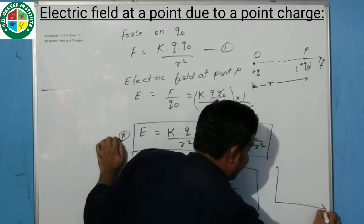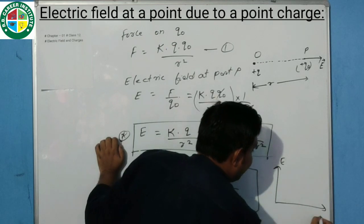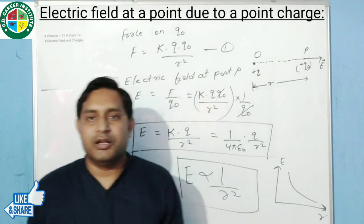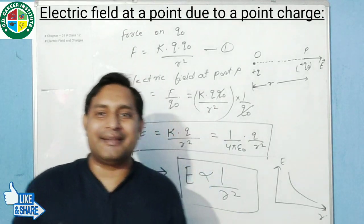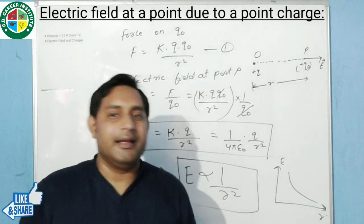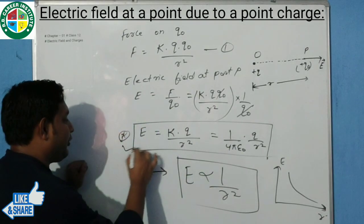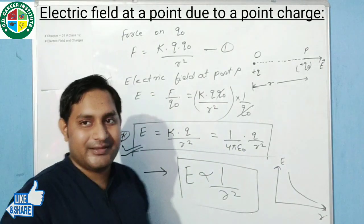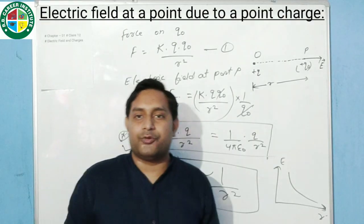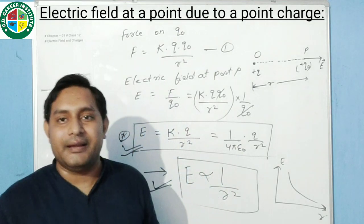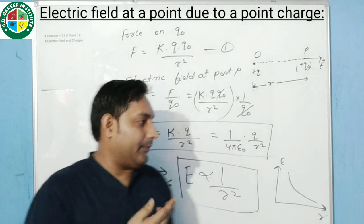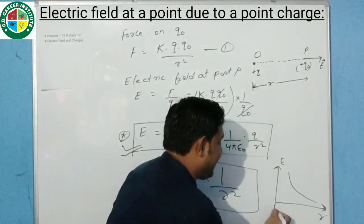अगर हम graph की बात करें, यह graph examinations में आते हैं draw करने के लिए। Electric field at a point due to a point charge: 1 upon 4π epsilon naught into Q upon R square — यह expressions important हैं numericals और derivations में। MCQs में question आ सकता है: which of the following correctly depicts the relation between E and R for a point charge? तो यह graph examinations में आते हैं।